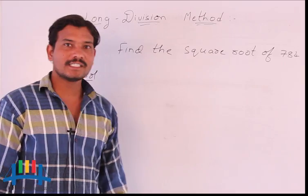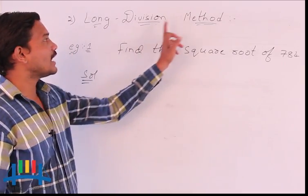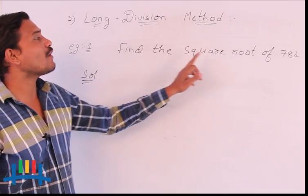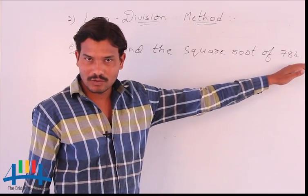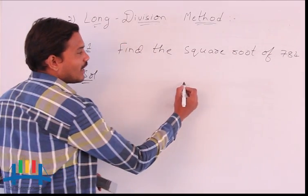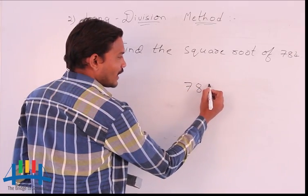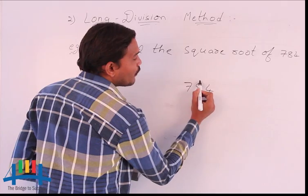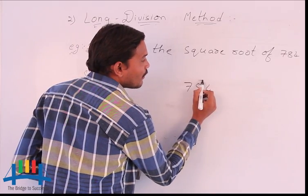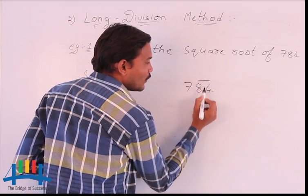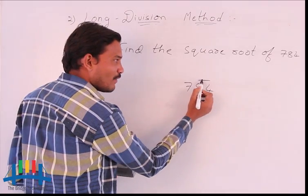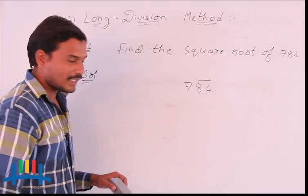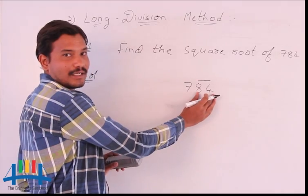Now we are going to discuss the second method, that is the long division method. To discuss this method, I will consider one example: finding the square root of 784. First, I consider the number 784. From the unit's place, we should group them into periods — we consider 2 numbers as one pair, which is the first period. The remaining number is the second period.